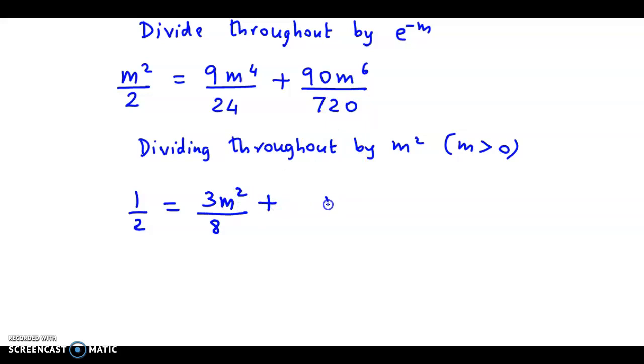and canceling from here leaves m^4 on this side, giving m^4 / 8. So 1/2 = 3m^2 / 8 + m^4 / 8.